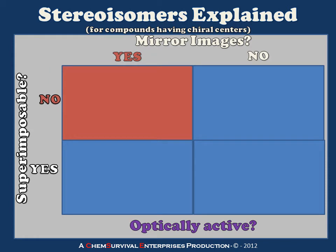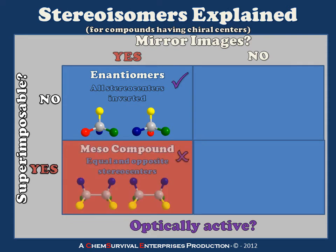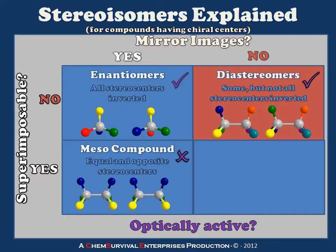Recall that non-superimposable mirror images are enantiomers, in which all stereocenters have been inverted and optical activity is present. In the case of superimposable mirror images which contain chiral centers, we're talking about meso compounds — those containing equal and opposite stereocenters which make the compound not optically active. Non-superimposable non-mirror images result when some but not all stereocenters are inverted, and we call these diastereomers, which do exhibit optical activity.